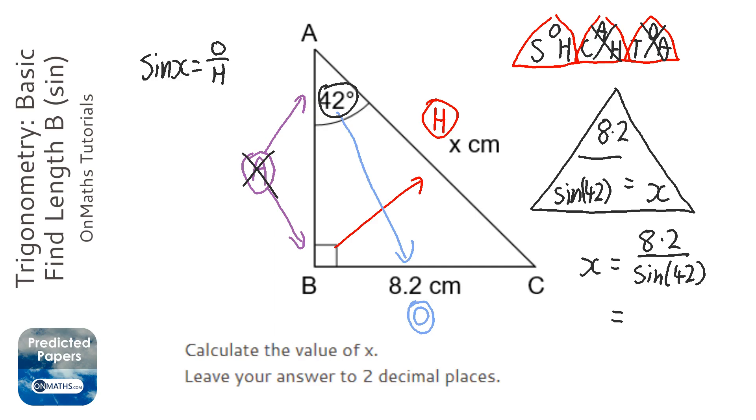Now, really important that you close the bracket. Most calculators now open a bracket for you to be helpful, but you've got to make sure you close the bracket. Then press equals, and you get 12.2547 and so on.